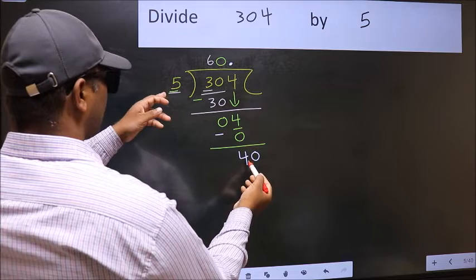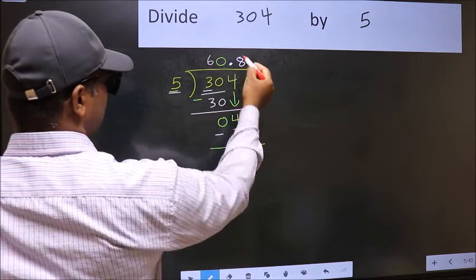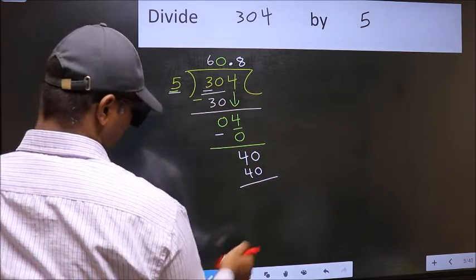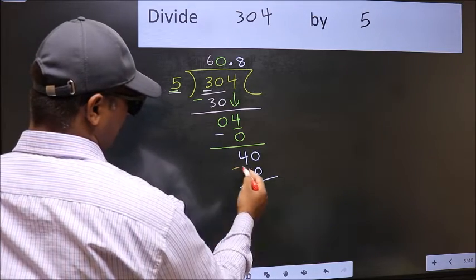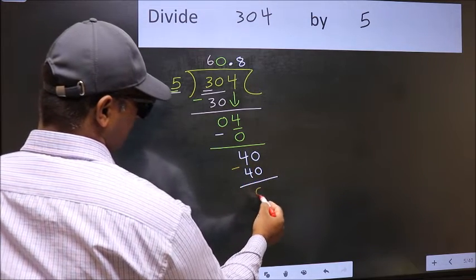When do we get 40 in the 5 table? 5, 8 is 40. Now you should subtract. 40 minus 40, 0.